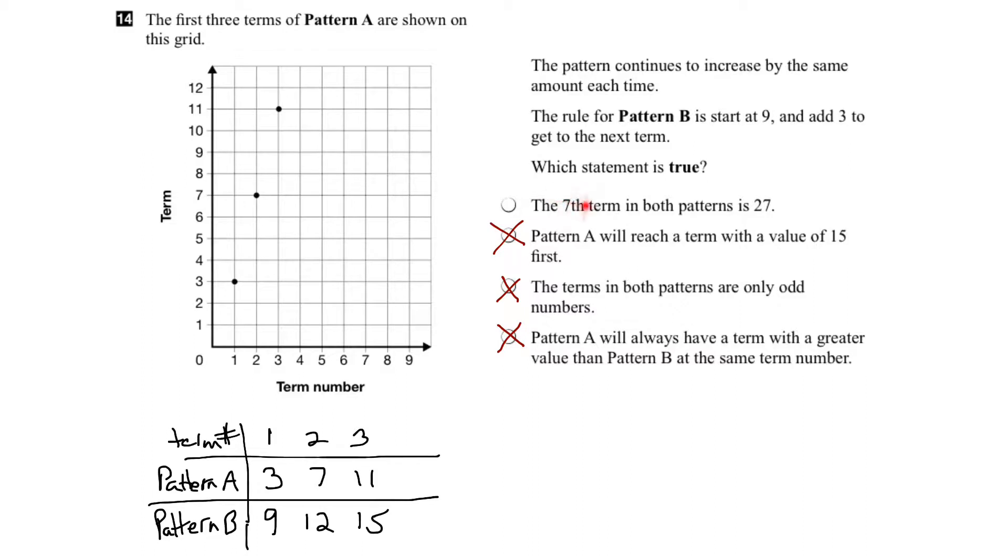Well, it looks like our first statement must be the one that's true, but let's verify. It says the 7th term in both patterns is 27. Let's extend this and add in the 7 terms. We've got term number 4, 5, 6, and 7.